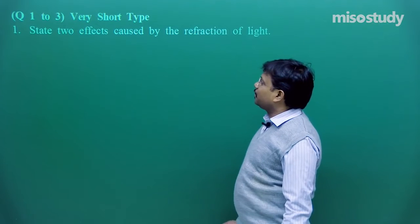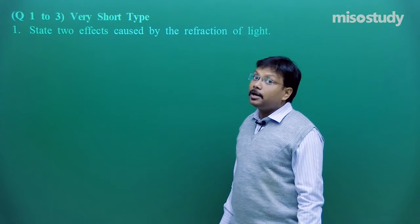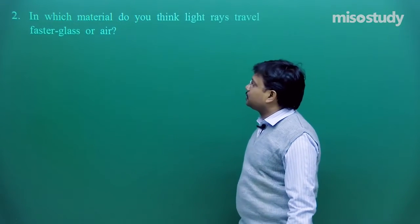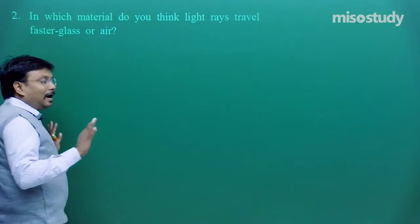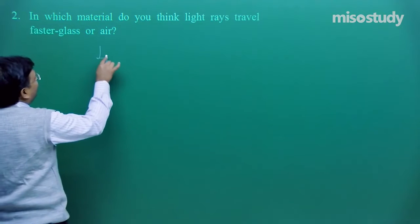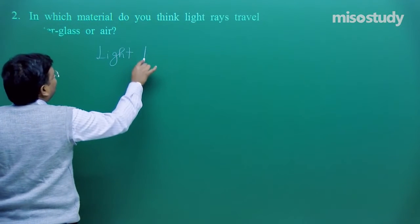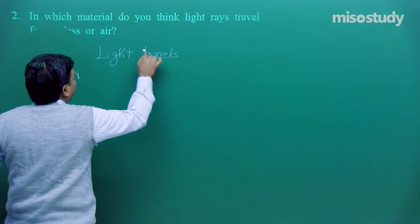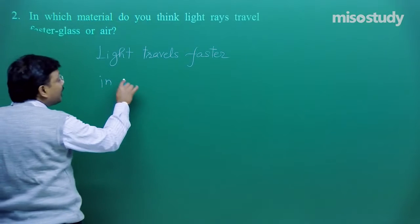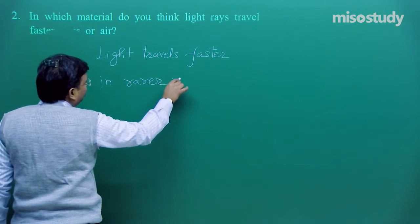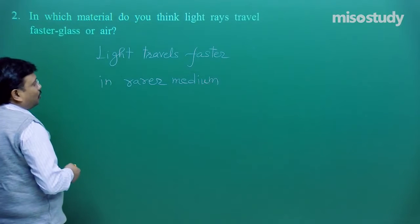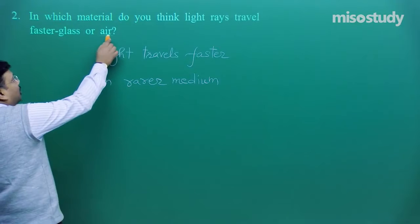After this, it comes question number 2 in the same category very short answer type. In which material do you think light rays travel faster? Now, I do not know the answer and I do not want to know the answer. My simple suggestion for you is light travels faster in rarer medium. So in rarer medium which one is rarer? Air.